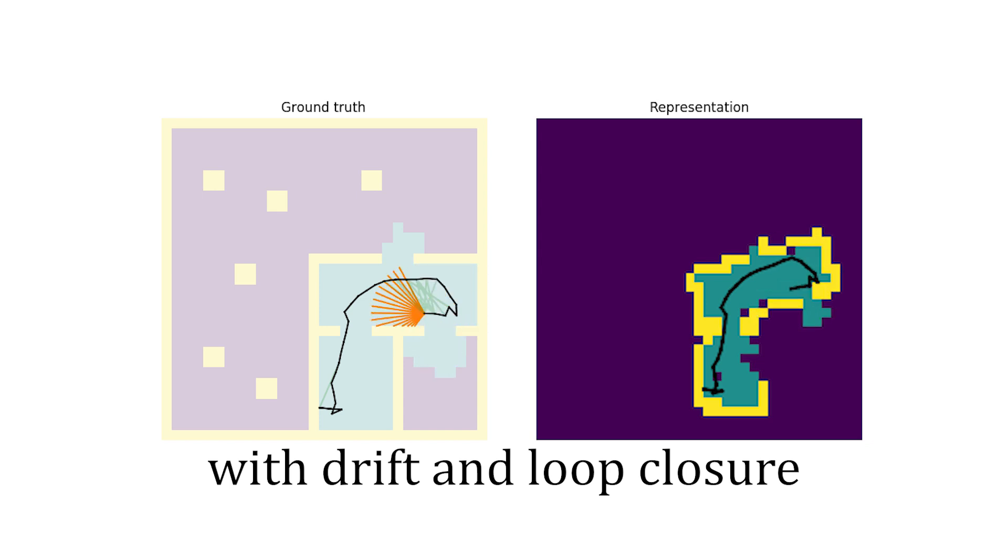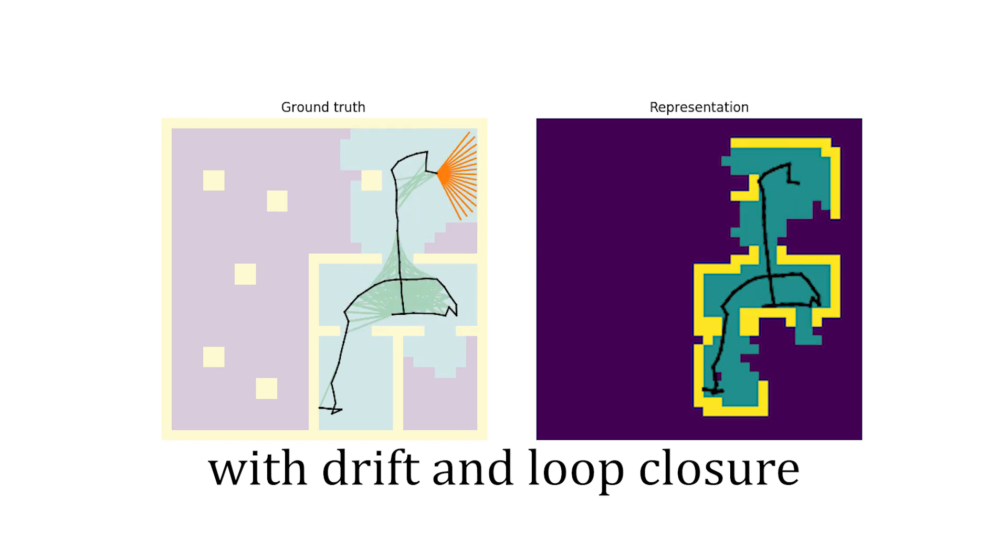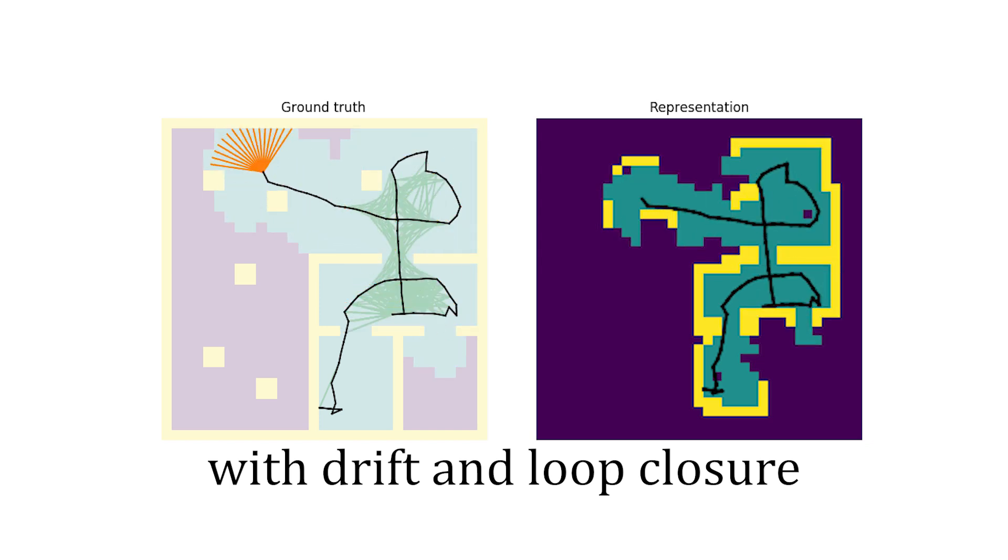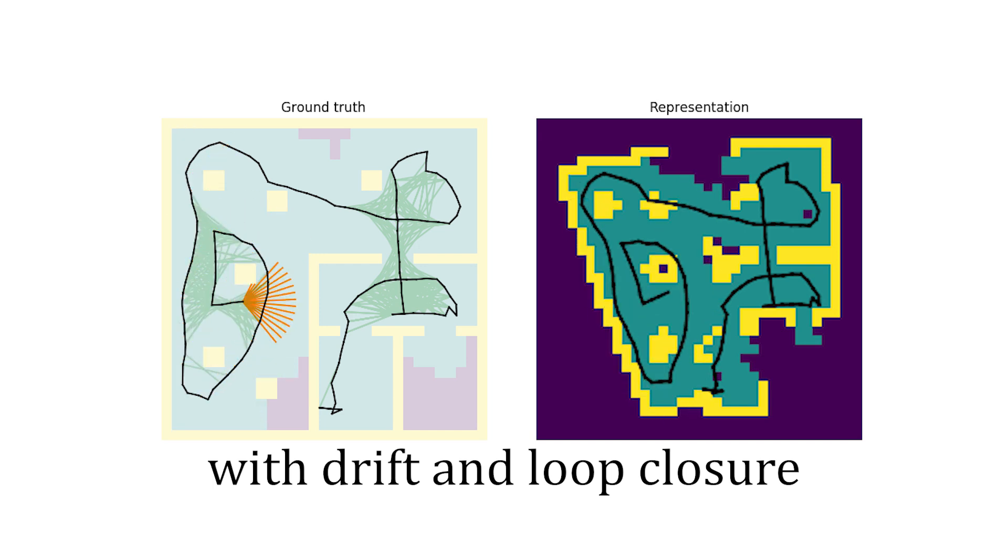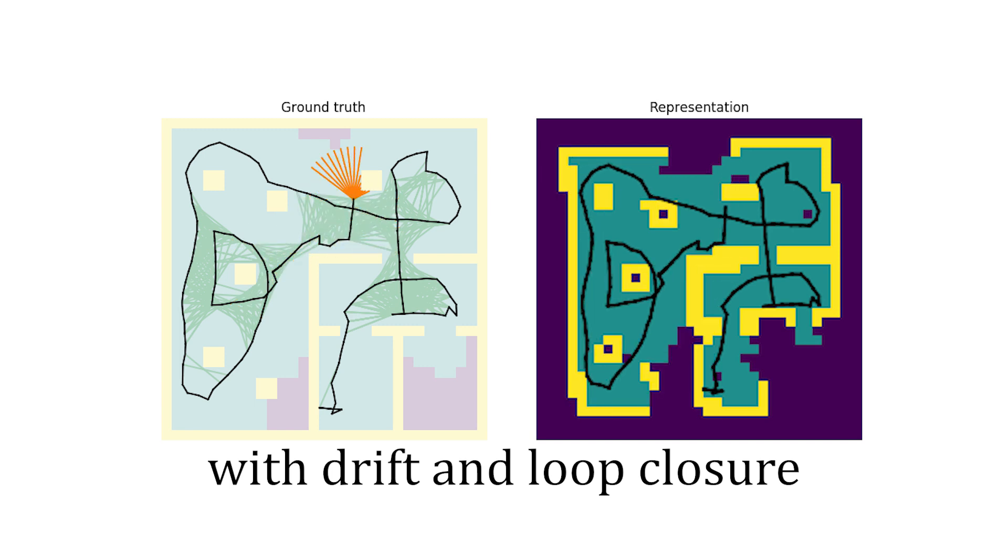This can be mitigated to some extent using loop closures and trajectory optimization. Green lines on the left show loop closures. Note that after every trajectory optimization, all rays must be retraced anew. This is computationally expensive.